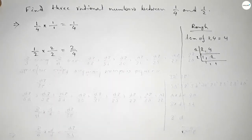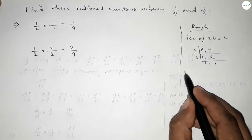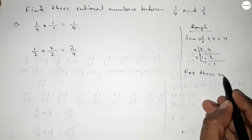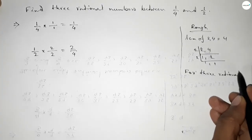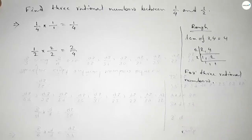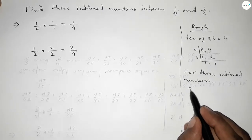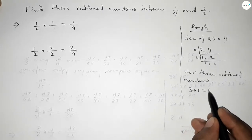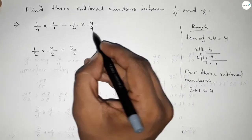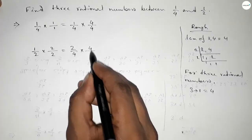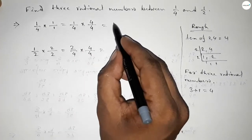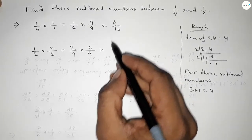Now for three rational numbers between any two numbers, we follow this method: multiply both numbers by 3 plus 1 equals 4, up and down. So we multiply 4 over 4 on both sides. This gives us 4 over 16 and 8 over 16.